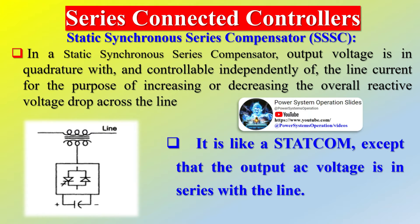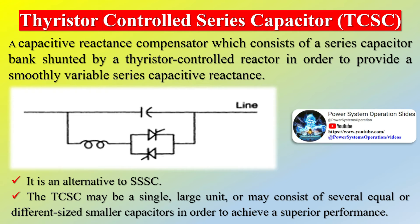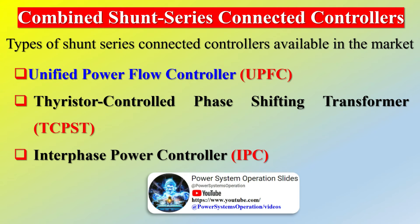Shunt controllers could be a variable impedance — capacitor, reactor, etc. — or a power electronic-based variable source, or a combination of both. They inject current into the system. If the current is in phase quadrature with the voltage, the controller supplies or consumes reactive power; any other phase involves control of both active and reactive power. Combined series-series controllers could be a combination of separate series controllers or a unified controller — the interline power flow controller — which balances real and reactive power flow in the lines. Combined series-shunt controllers could be separate series and shunt controllers or a unified power flow controller, injecting current with the shunt part and voltage in series with the series part. When unified, they exchange real power between the series and shunt controllers via a power link.